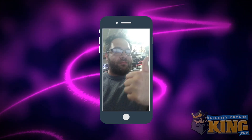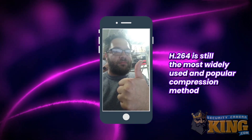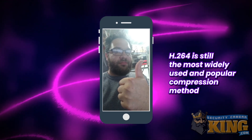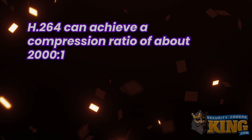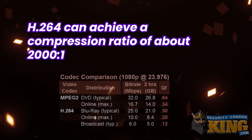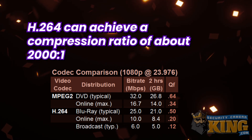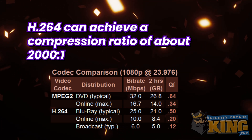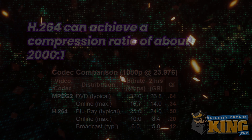H.264 has been a fantastic compression method and is still currently the most popular. This is because H.264 offers a very good compression ratio with minimal loss in quality and doesn't tax an encoding system too hard.